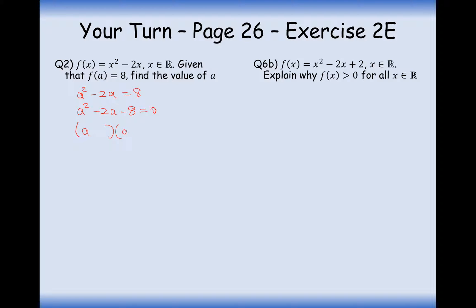Let's try factorising. So in this case here, it times this to make minus 8, but adds to make minus 2. I think this is the answer here, a minus 4 and a plus 2. So in which case a is either equal to 4 or a is equal to minus 2.